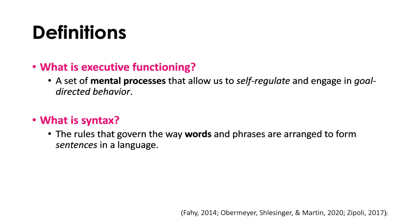I'm going to start by defining the two things I've been talking about. When we're talking about executive functioning, we're talking about the set of mental processes that allow us to self-regulate and engage in goal-directed behavior. I have separate executive functioning presentations where I go into all the specific types and separate them into five areas, which I'll cover briefly at the end.